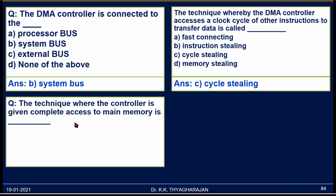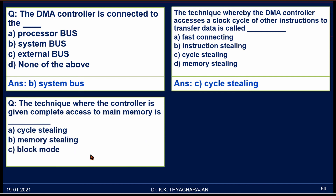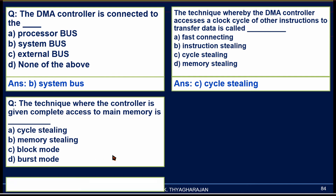The technique where the controller is given complete access to main memory is: A) Cycle Stealing, B) Memory Stealing, C) Block Mode, D) Burst Mode. Here the controller transfers the complete block, and the name given for this method is Burst Mode, not Block Mode. The correct answer is D, Burst Mode.